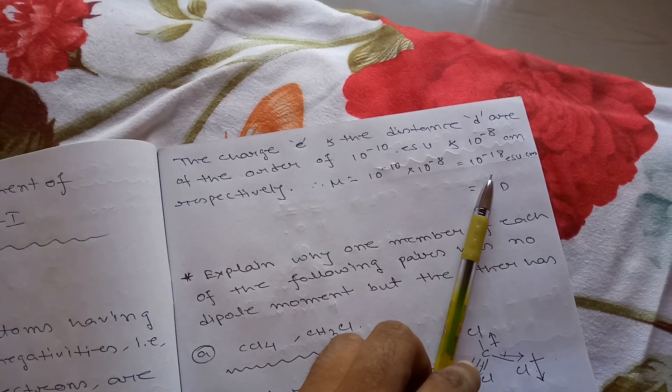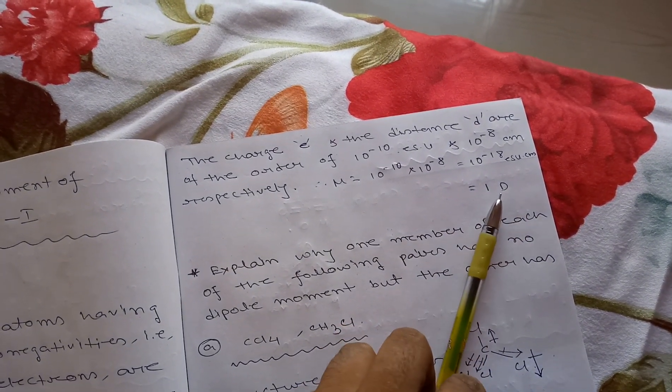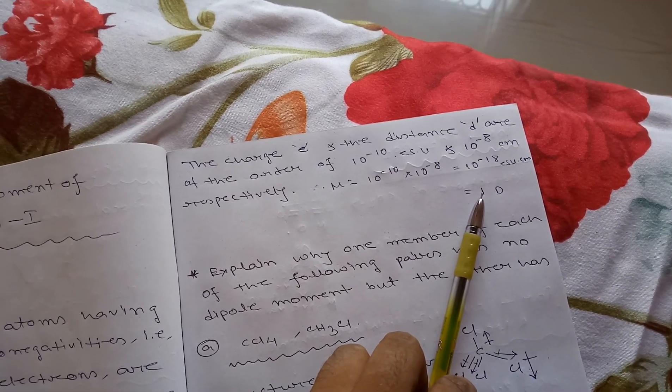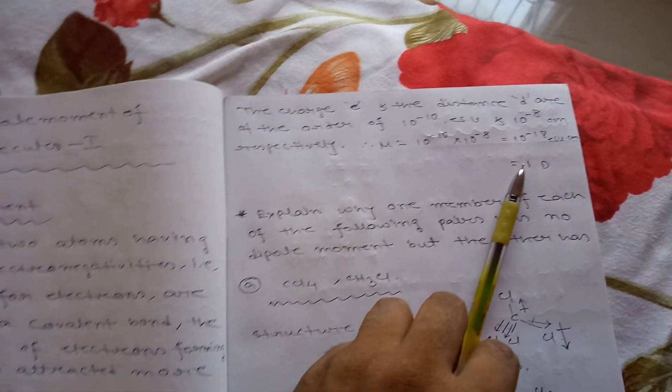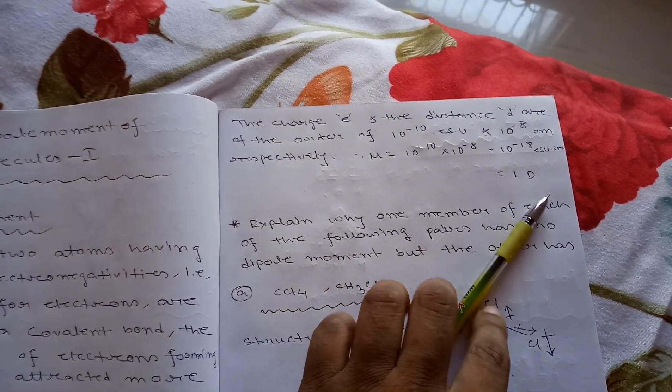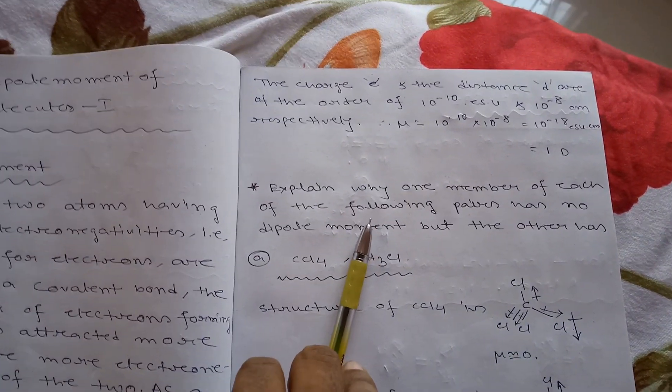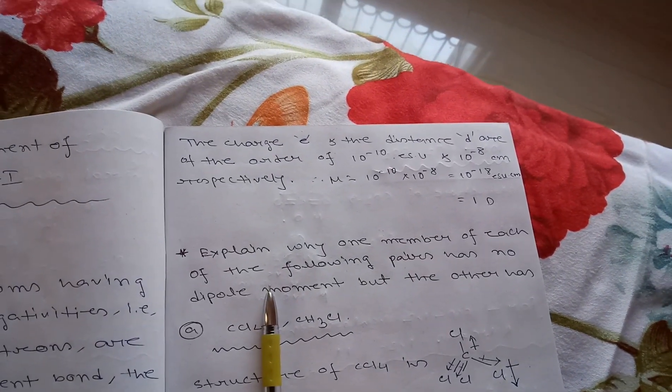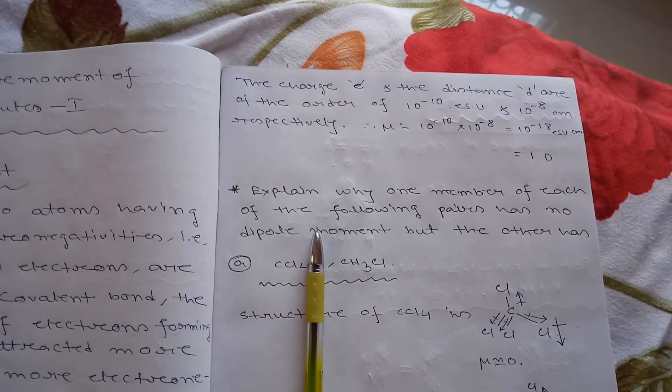μ equals 10^-10 × 10^-8, which equals 10 to the power -18 esu centimeter. Now 1 Debye equals 10 to the power -18 esu centimeter. Dipole moment is a vector quantity.